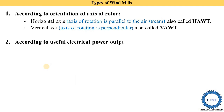The second classification is according to useful electrical power output. We know that windmills are used to produce electricity — they convert wind energy into mechanical energy, which is then converted into electrical energy in the generator. The main output is electrical power, and windmills are classified based on how much electrical power they produce.